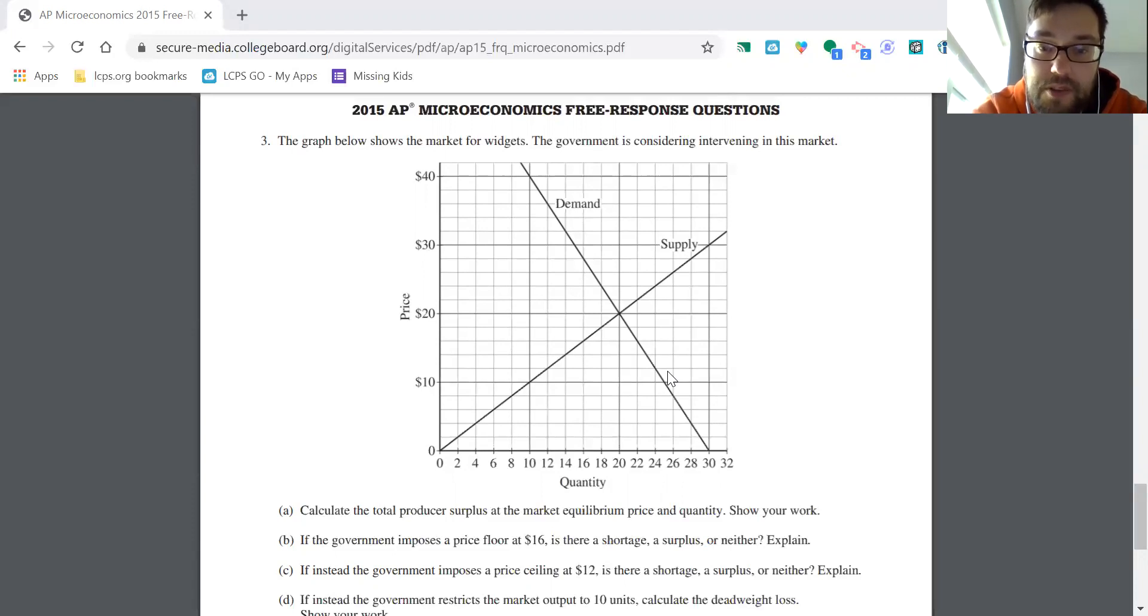If you were calculating producer surplus, it would be this small triangle down here. Consumer would be this small one up here. And this deadweight loss is represented by this rather large triangle here. As you can imagine, it's rather disrupting to restrict the market to a quantity of only 10. We need to find the area of that. I think it's easier if you split this up into two triangles. So this red triangle here goes from 10 to 20, so that side is 10. This side here, we've got a point of 20 and a point of 10, so that one happens to be 10 as well.